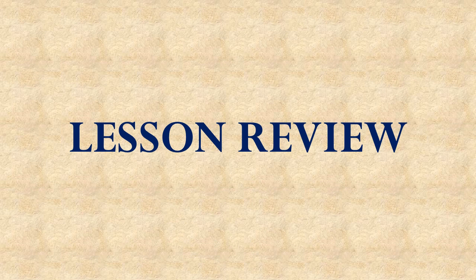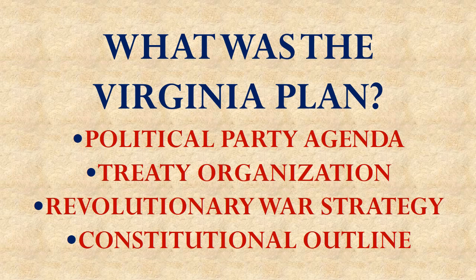Now let's review what we learned in this lesson. First, what was the Virginia Plan? Was it a political party agenda, a treaty organization, a revolutionary war strategy, or a constitutional outline? The correct answer is that it was a constitutional outline — James Madison's plan for a new constitutional government — and it ended up providing the basis for the government we have in the United States today.